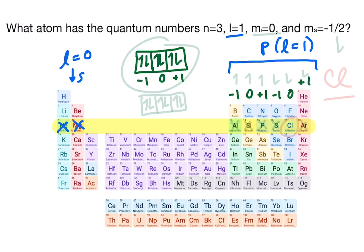And since m sub l is equal to 0, we know we can eliminate all the elements that do not have m sub l equals 0. So we're left with silicon and chlorine.